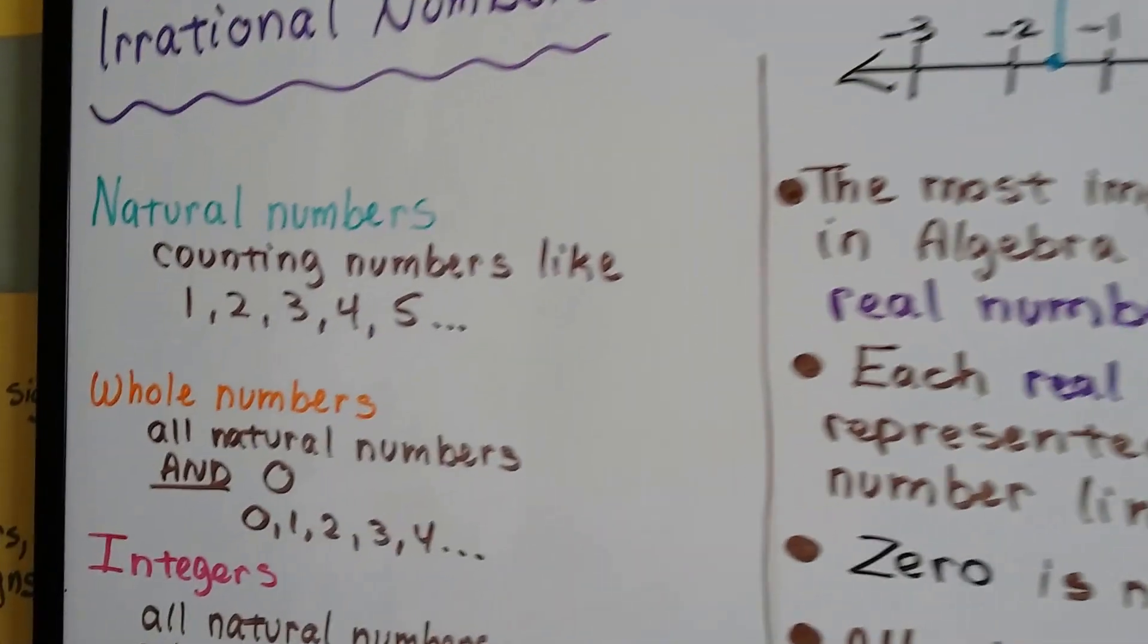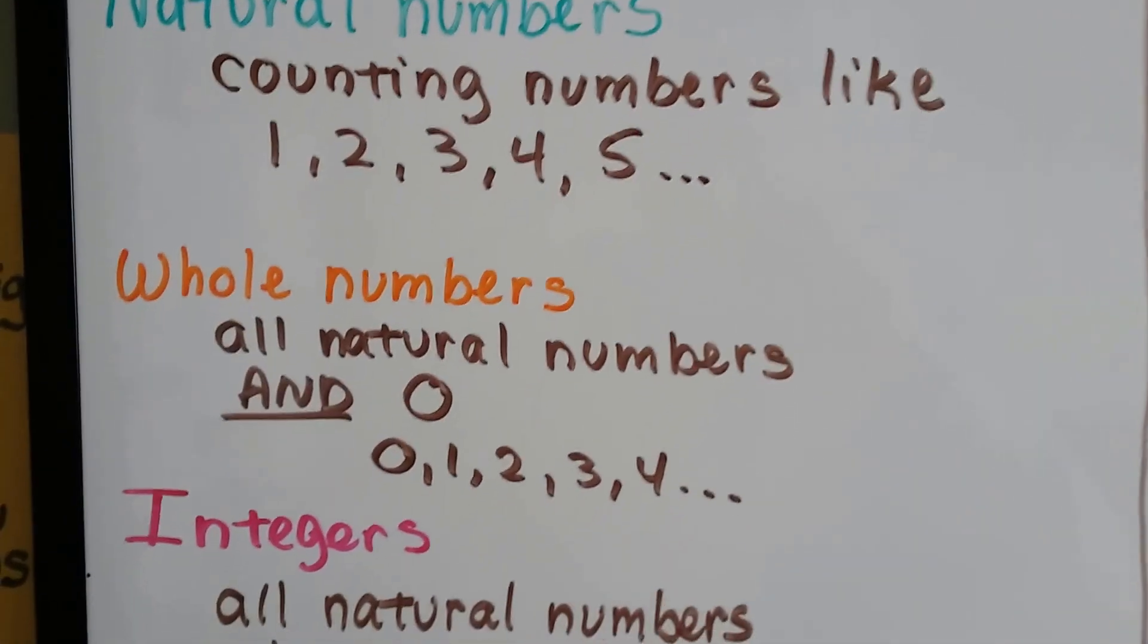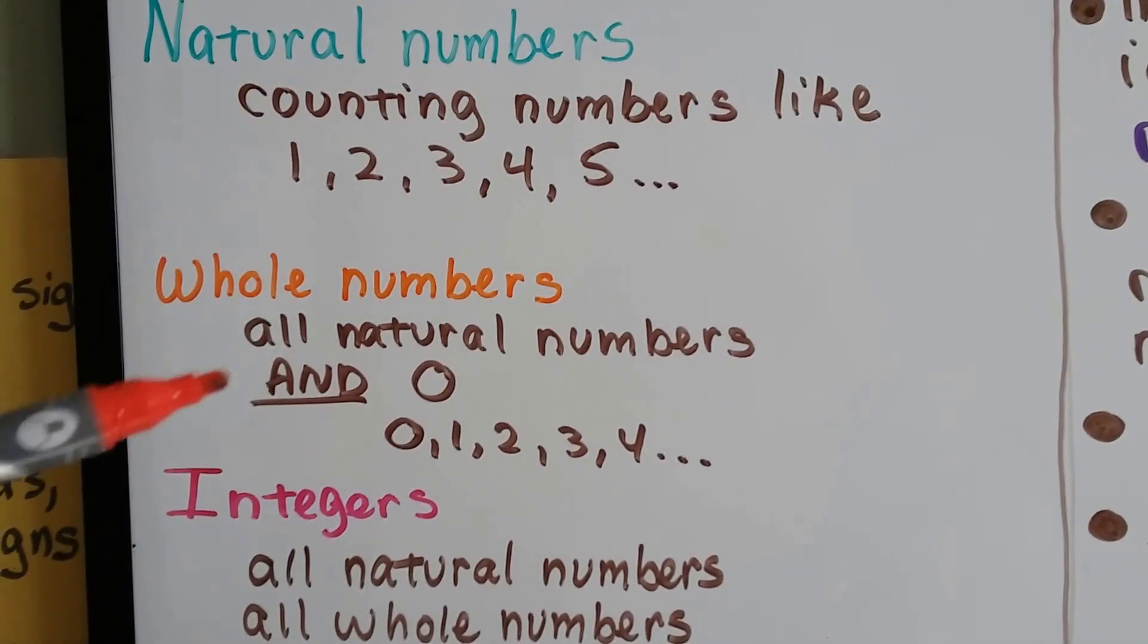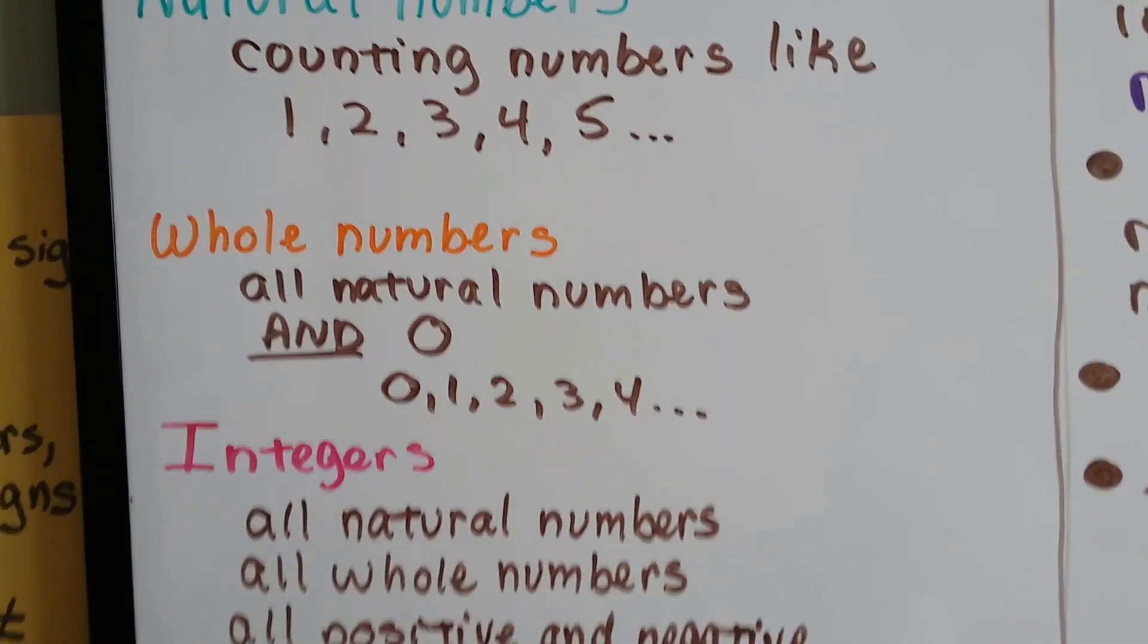One more time: Natural numbers are the counting numbers like 1, 2, 3, 4, 5. Whole numbers include the natural numbers and add zero to the list.